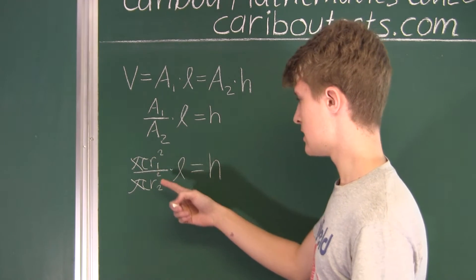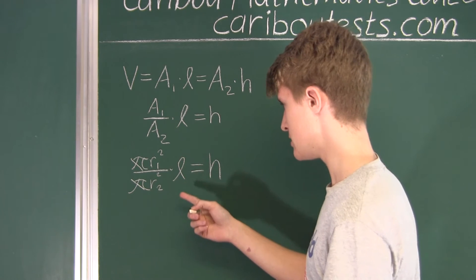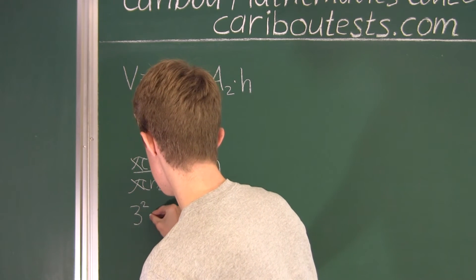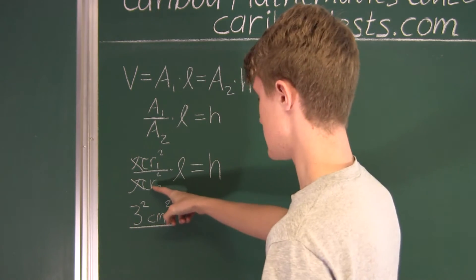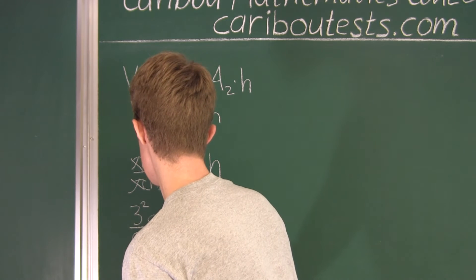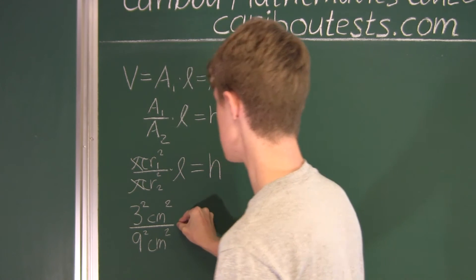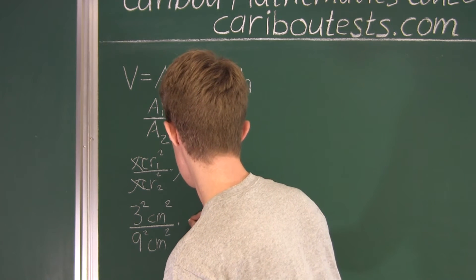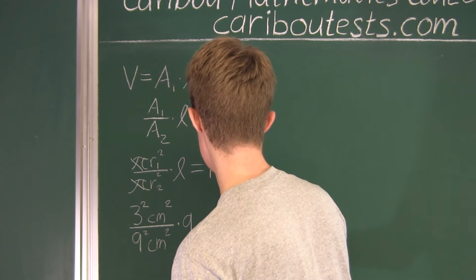So now we can substitute in. So we know that the radius of the first cylinder was 3. So we have 3 squared centimeters squared over, then we have 9 squared centimeters squared, and then that is multiplied by length, which is 9 centimeters. And that's equal to H.